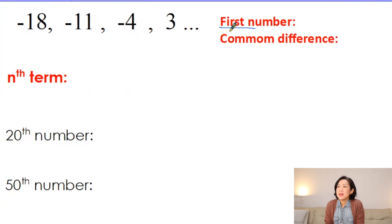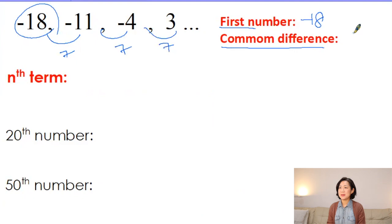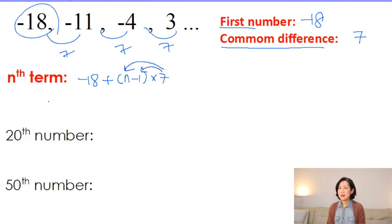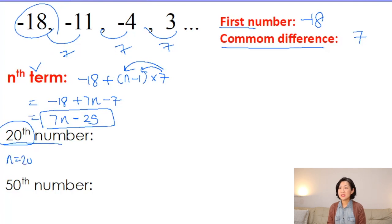Next number sequence: identify the first number, which is minus 18, and the common difference — adding 7 each time, so common difference is 7. Using the formula: minus 18 plus (n minus 1) times 7. Simplifying: minus 18 plus 7n minus 7, giving 7n minus 25. Let's practice: for the 20th number, n = 20: 7 times 20 minus 25 equals 140 minus 25 = 115.